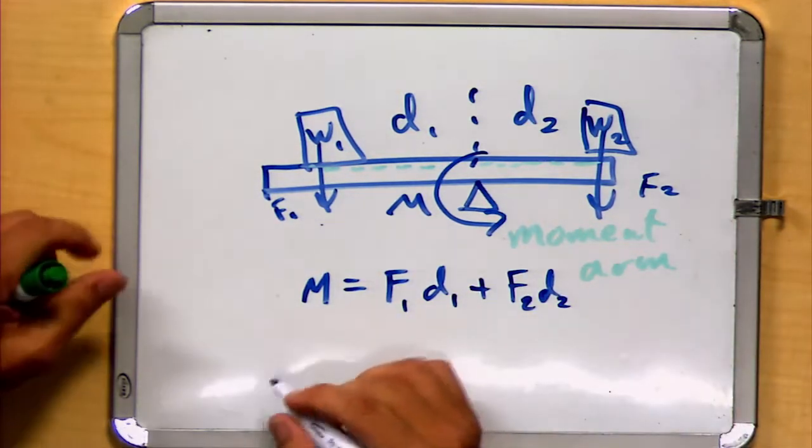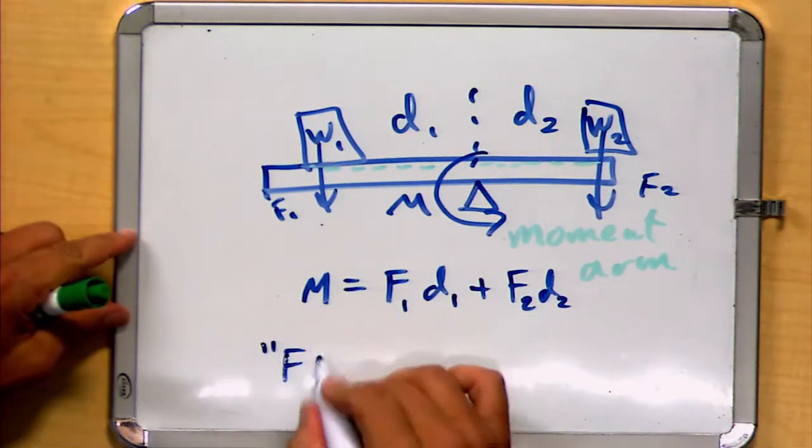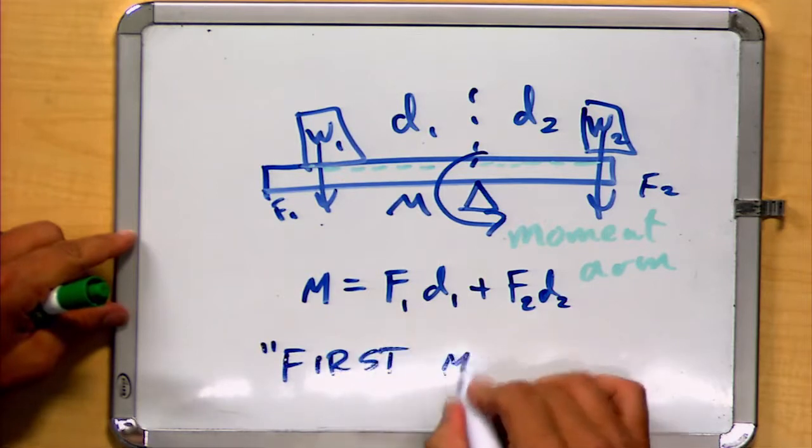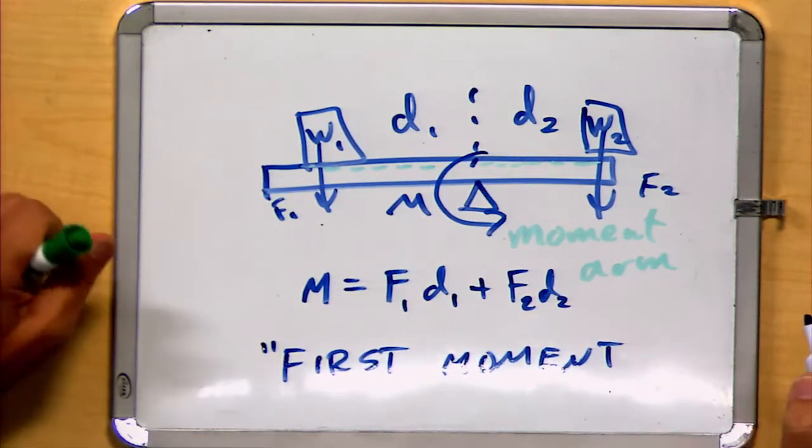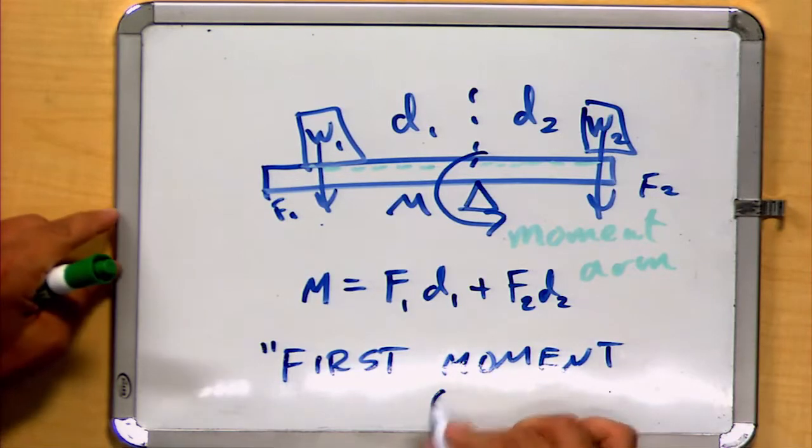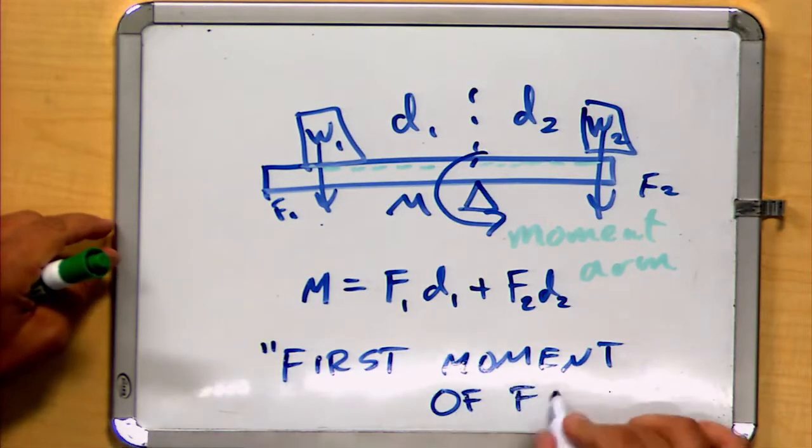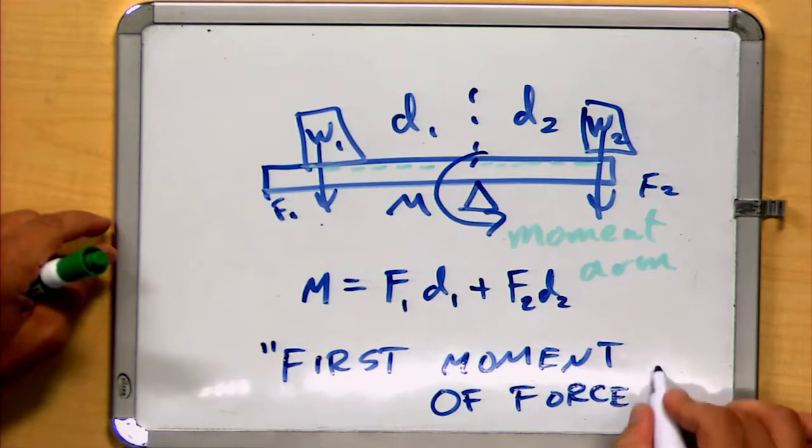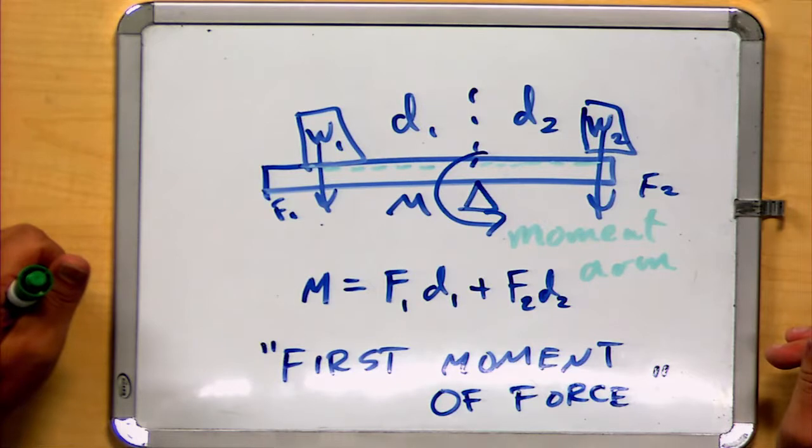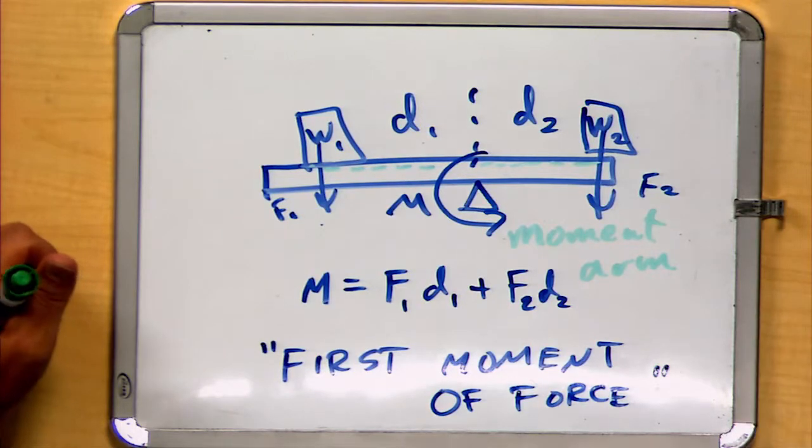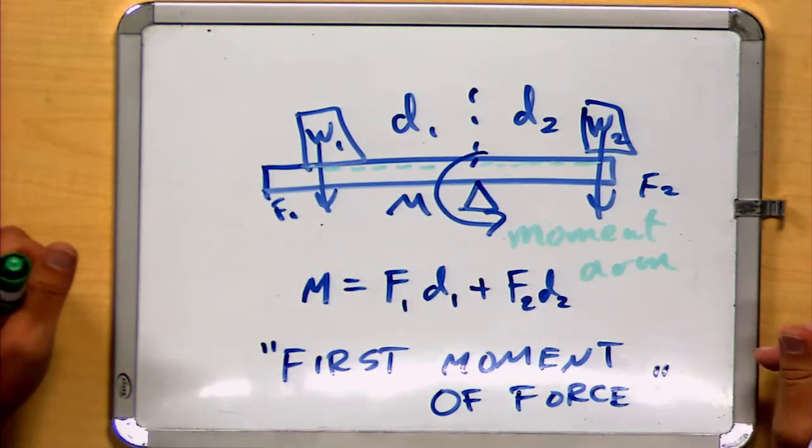This dependence on distance is called a first moment. And it's a first moment of whatever it's applied to. So in this case, this would be perhaps a first moment of force. Although generally, we kind of just leave out the terms of force when we're using the term moment, because that was the first sort of definition that we used for a moment.